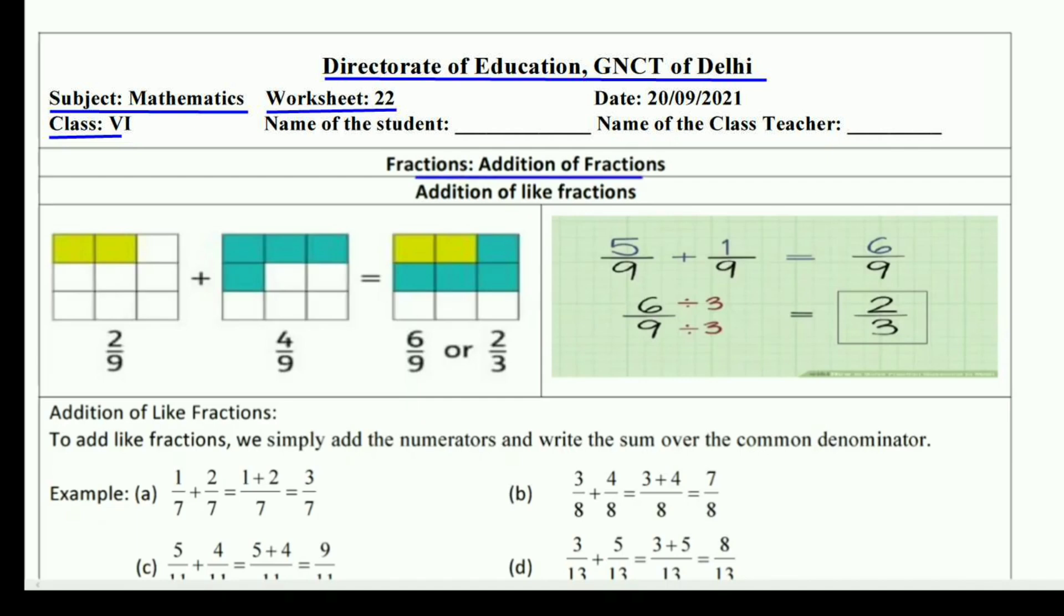As you all know, in the last worksheet we learned about fractions, specifically how to compare two fractions to determine which is greater and which is smaller. We learned about two types of fractions: like fractions and unlike fractions. Like fractions are those which have the same denominator. If both fractions have the same denominator, they are like fractions. If both have different denominators, they are unlike fractions.